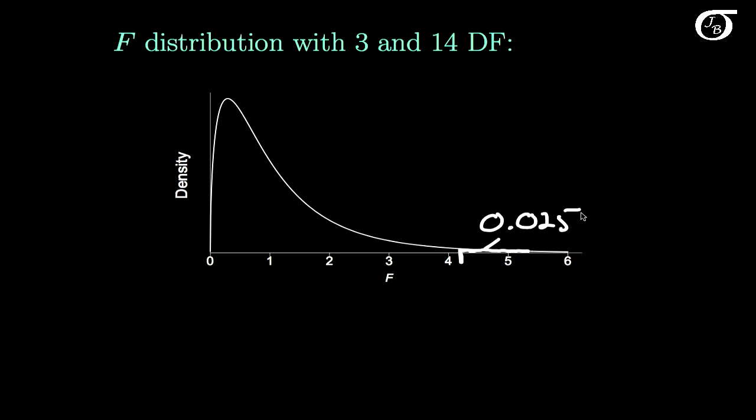This has some applications for us later on. We're going to call this value F 0.025, the F value with 0.025 off to the right.